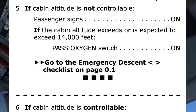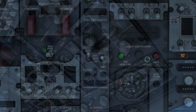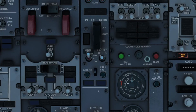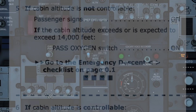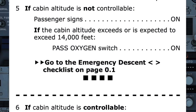Step 5 is conditional: if the cabin altitude is not controllable we complete the step, otherwise continue to step 6. As we just saw, the aircraft has depressurized and we have no control even with the outflow valve closed. We therefore turn on the passenger signs as directed. The next action depends on whether the cabin altitude exceeds or is expected to exceed 14,000 feet. We know the cabin altitude is at 36,000 feet, and therefore turn on the passenger oxygen switch.